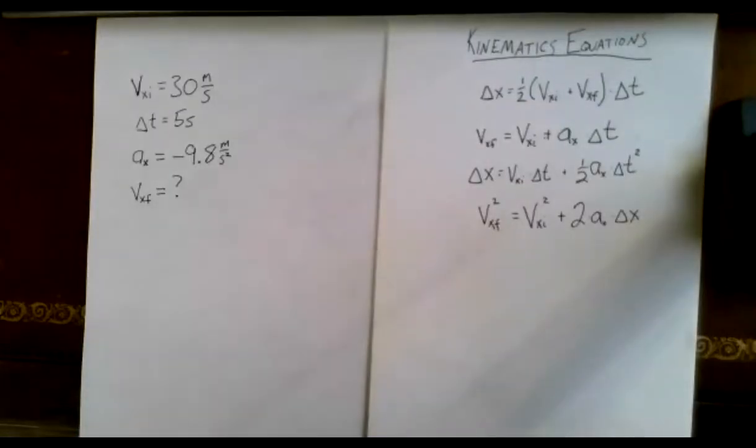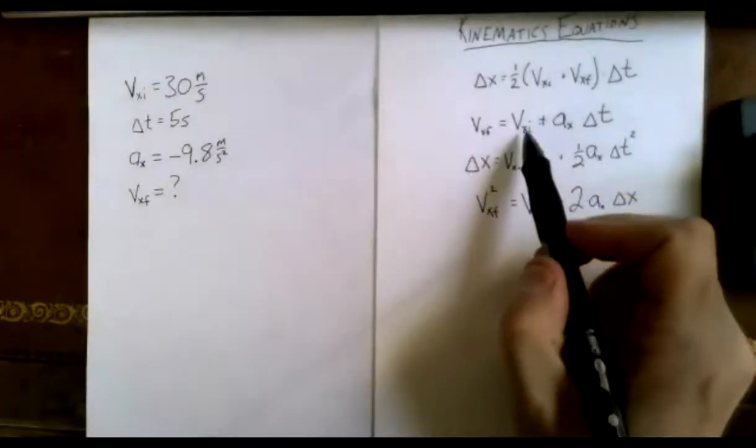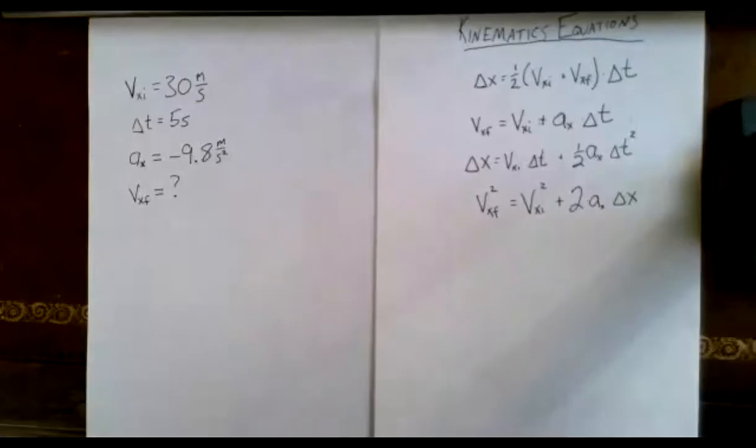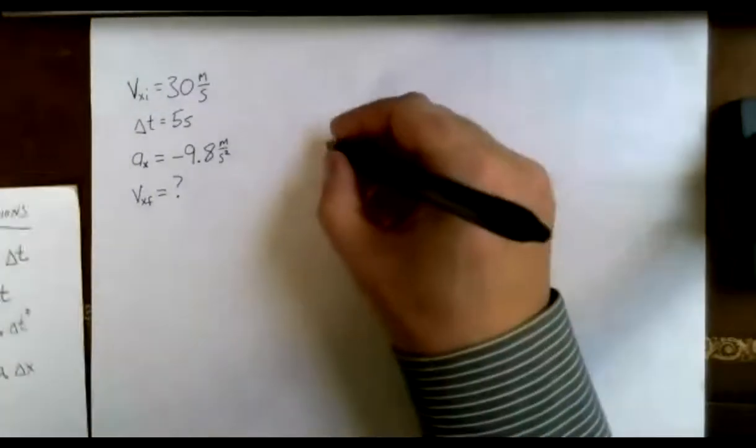We just need to pick an equation now to use. So if I've got VxI, delta T, Ax, and VxF, which one of those big four equations would I pick? The second one. Yeah, the second one, right? The second one right here, VxI, delta T, Ax, and VxF, right? Those same four symbols. So I'll copy that down.